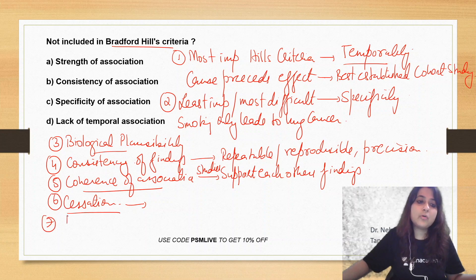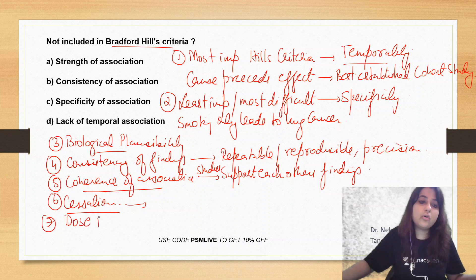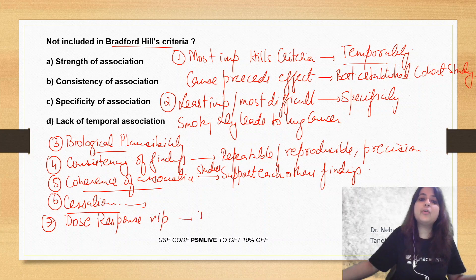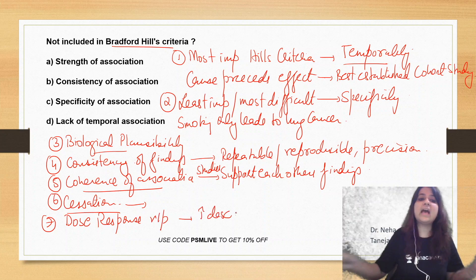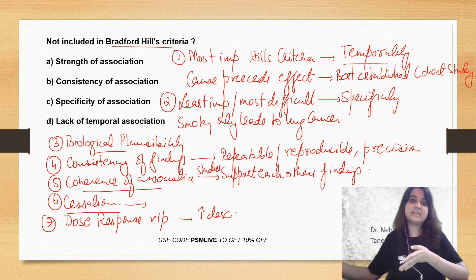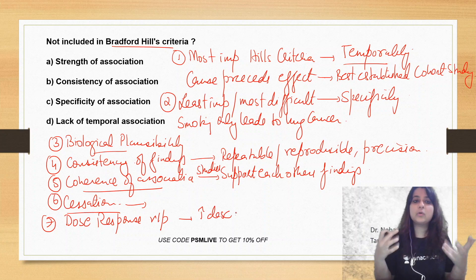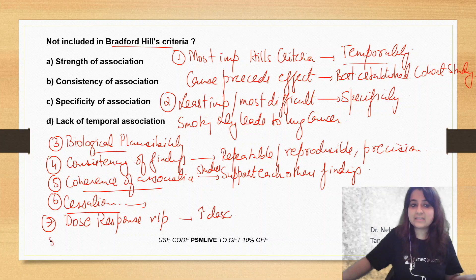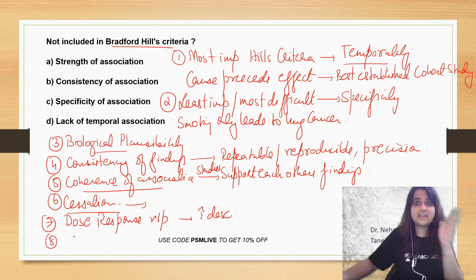Then there is one more which starts with D — dose-response relationship. If you increase the dose, the outcome increases. For example, if we start smoking more cigarettes, the chance of lung cancer increases.